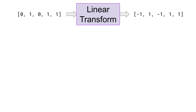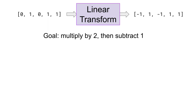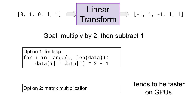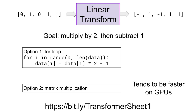First, we want to turn zeros into negative one and keep ones unchanged. We can do this by multiplying by two and subtracting one. One option is to implement this with a for loop, going element by element through our vector. A second option — and the one we will be using — makes use of matrix multiplication. A reason to prefer matrix multiplication is that such operations are very fast when run on a GPU, which tends to be a commonly used resource for training and running neural networks. Let's go ahead and implement this in Sheets.